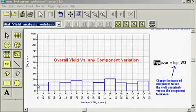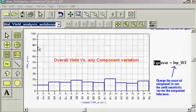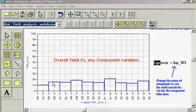This plots for us the overall amplifier yield. Notice here that the overall yield doesn't change as we vary the width W3. So W3 is not a sensitive element in our design.